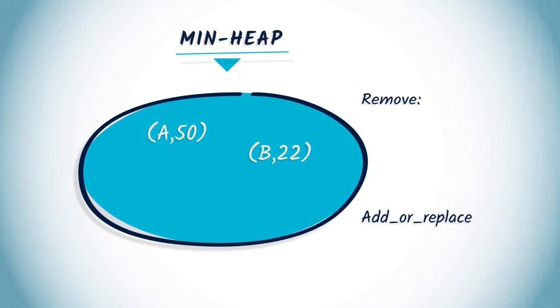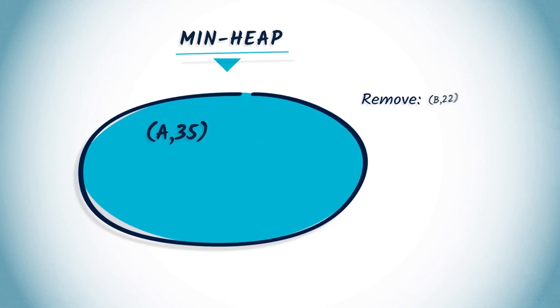Now let's ADD OR REPLACE with the couple A 35. 35 is less than 50, and so the entry corresponding to A will be updated, resulting in the following min heap. Finally, let's remove an element from the min heap. This will return B 22 and update the min heap as follows.